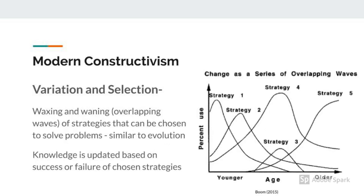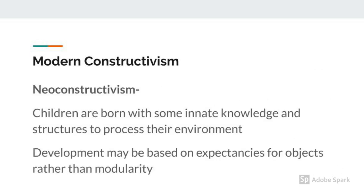The modern constructivism theories are variation and selection and neoconstructivism. Variation and selection suggests that individuals choose from a variety of possible strategies when solving problems, and that the strategies they choose are based on the success or failure from previous use. As you can see in the diagram, variation and selection uses an overlapping wave structure to estimate how strategy use changes over time. Neoconstructivism suggests that children are born with some innate knowledge and have structures in place to help them process input from their environment. A key difference in neoconstructivism is the idea that development may be based on children's expectancies about objects rather than modules dedicated to specific types of processing.